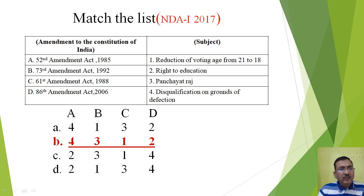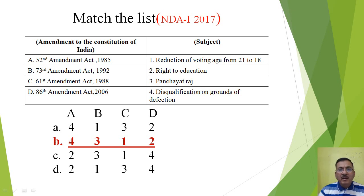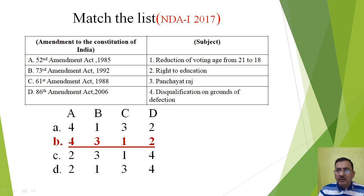The 86th Amendment Act, 2006 deals with the right to education. Children from 6 to 14 years are given the fundamental right to get education up to the age of 14 years. These are the important amendments that were carried out by parliament. Parliament alone has the power to amend the constitution — the state government cannot make amendments to the constitution.